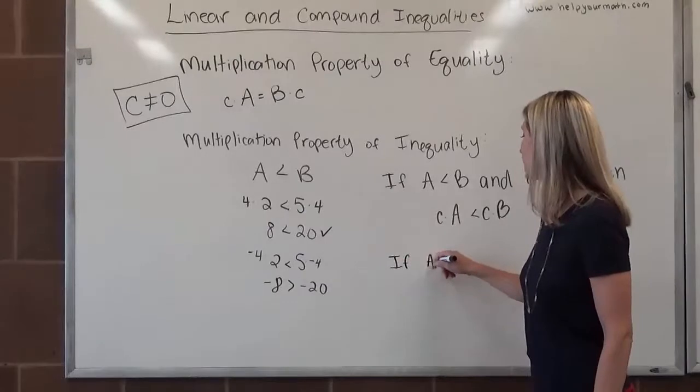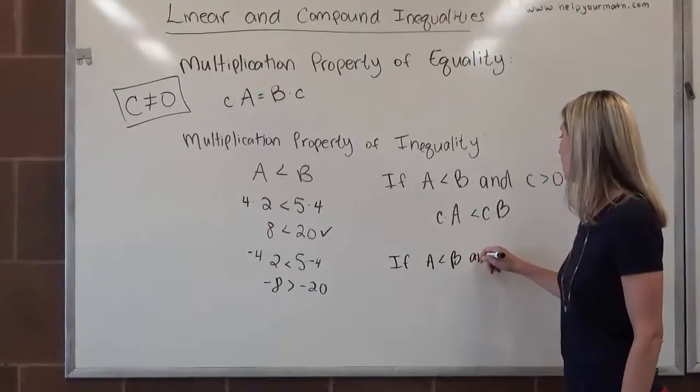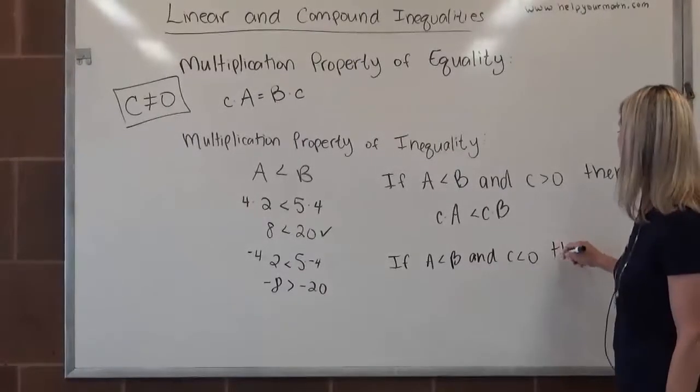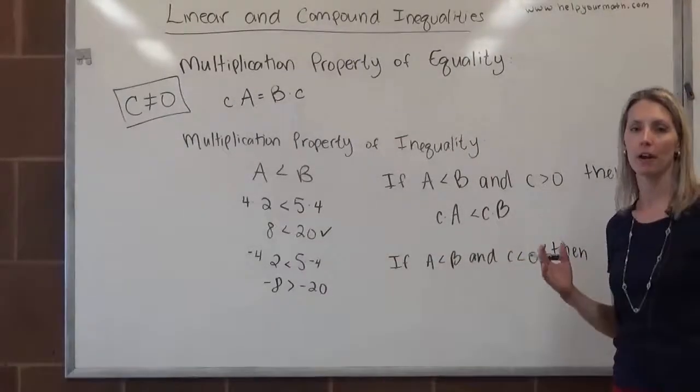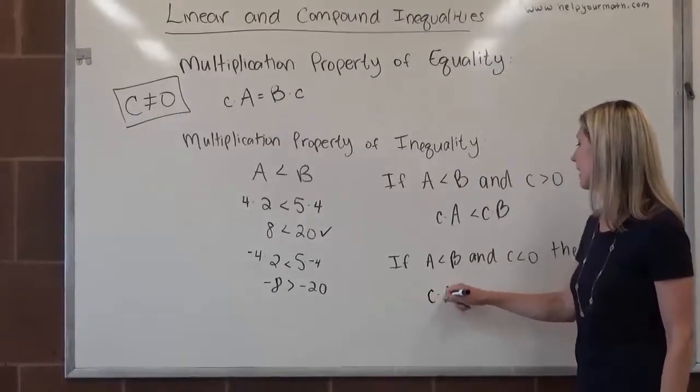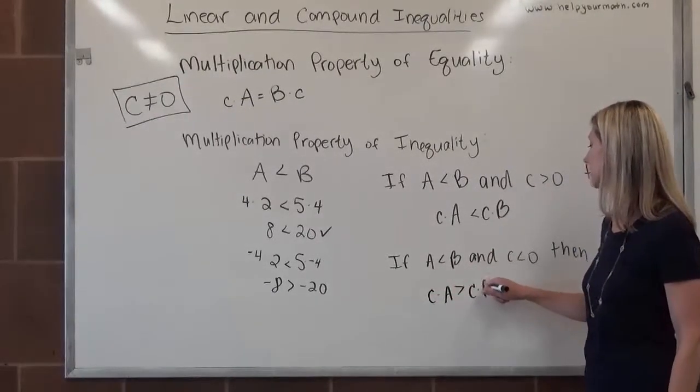If we multiply both sides by something positive, it maintains that inequality. However, if A is less than B and C is less than zero, C is negative, then remember what happens. Everything that was smaller is now bigger, everything's backwards, so the inequality flips around. Then C times A is greater than C times B.